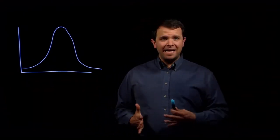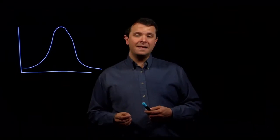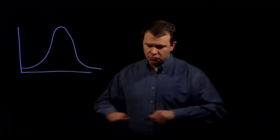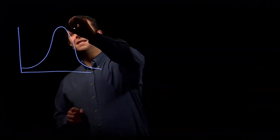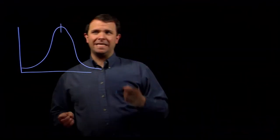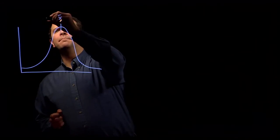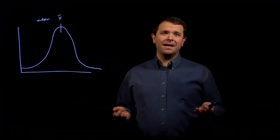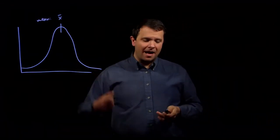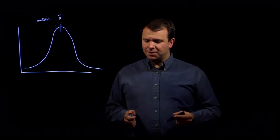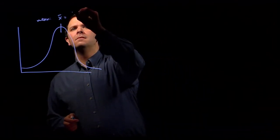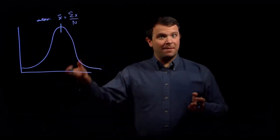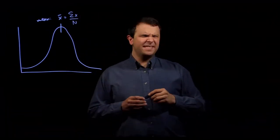And a nice thing about a trait that is normally distributed is that you can describe that distribution using only two numbers. And the first is the center, the mean, designated x bar. And this is just the arithmetic average of all of the observations that you made. So you add up all of your observations and you divide it by the number of observations. That's easy enough.